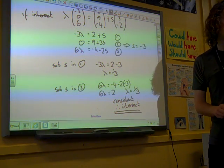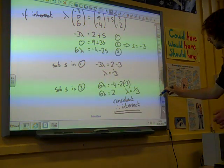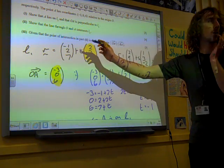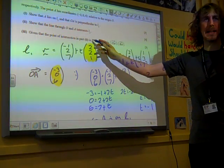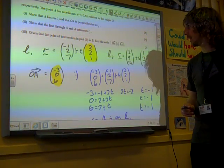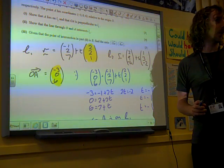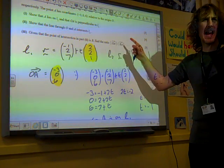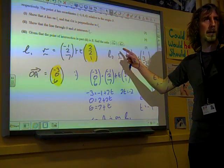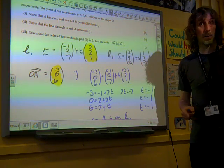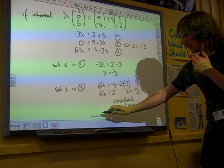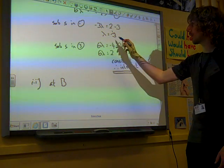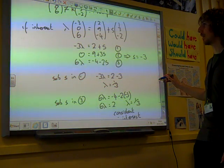Brilliant. Part 3. Now the question does something slightly different. Given that the point of intersection we've just found is called B, find the ratio OA to BA. I need to work out what I know here. I already know the vector OA, so that's okay. The vector BA, that's the vector from B to A. I need to find the point B. I haven't got the point B yet.